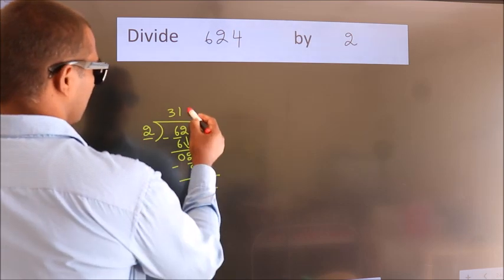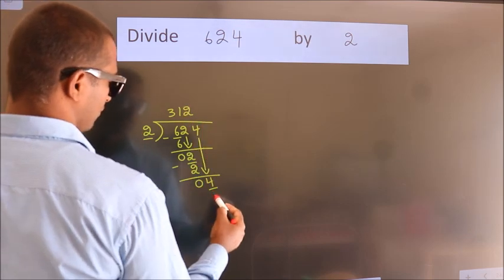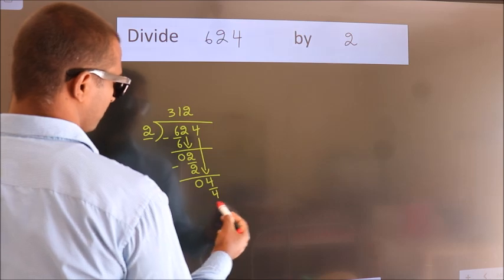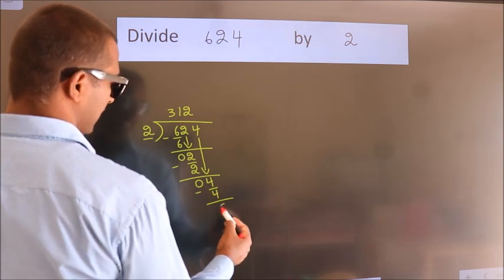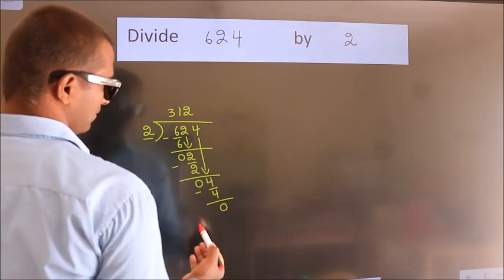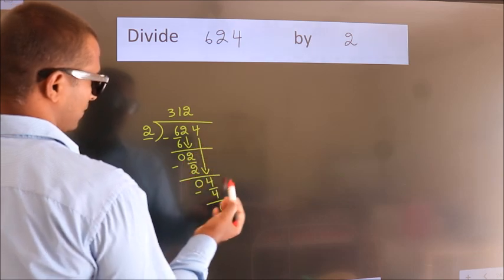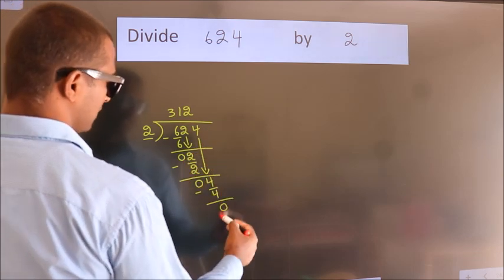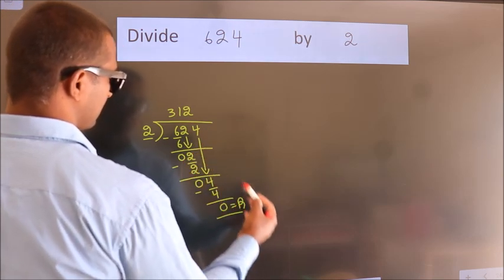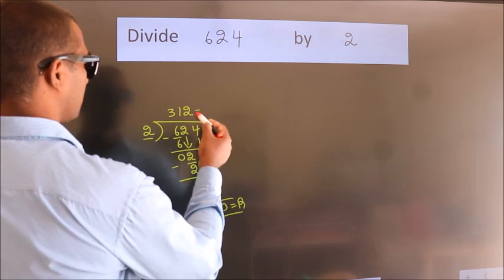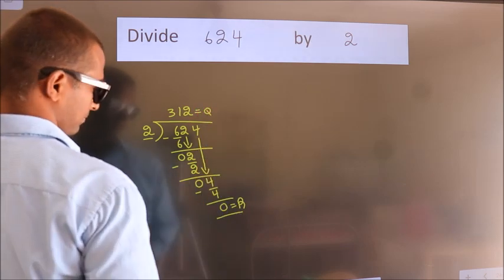When do we get 4 in the 2 times table? 2 times 2 is 4. Now we subtract and get 0. There are no more numbers to bring down, so we stop here. This is our remainder, and this is our quotient.